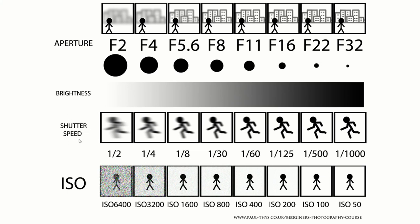If we look at the shutter speed, at half a second somebody running is going to be blurred, and then as we go up the shutter speed, when we get to about a thousandth of a second, the person is going to be sharp.